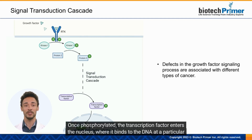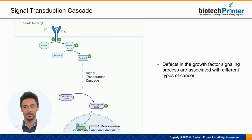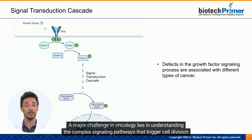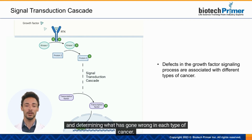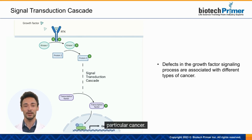Once phosphorylated, the transcription factor enters the nucleus, where it binds to the DNA at a particular location, activating expression of a specific gene. Defects in the growth factor signaling process are associated with different types of cancer. A major challenge in oncology lies in understanding the complex signaling pathways that trigger cell division and determining what has gone wrong in each type of cancer. Once these signaling pathways are understood, it is possible to develop targeted therapies for the particular cancer.